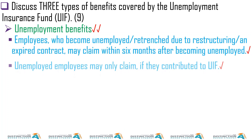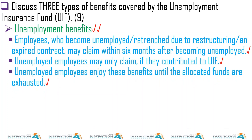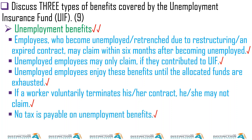The first one is unemployment benefits. Employees who become unemployed or are retrenched due to restructuring or their contract expiring are entitled to claim — they were contributing to UIF while employed. These people may claim within six months after becoming unemployed. Unemployed employees may only claim if they contributed to UIF, and enjoy these benefits until the allocated funds are exhausted. If a worker voluntarily terminates their contract, they may not claim.